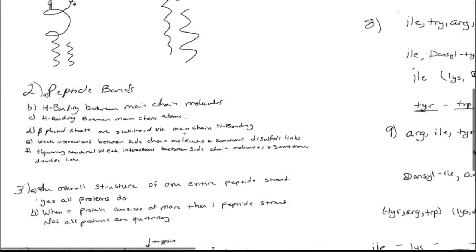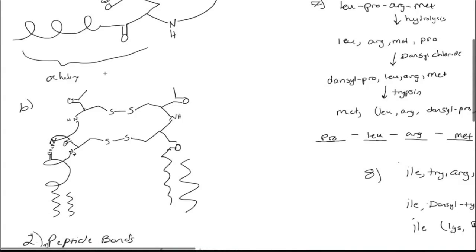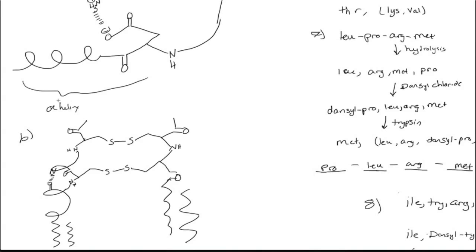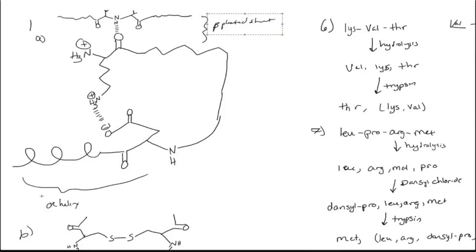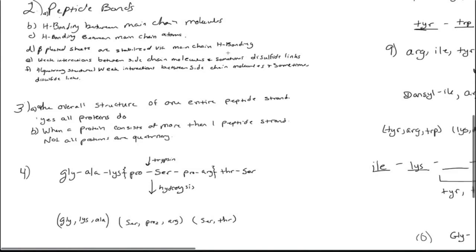Remember, I made the analogy last time with alpha helix and beta-pleated sheet. Why is an alpha helix called an alpha helix? It's just because alpha is the first letter of the Greek alphabet, and the alpha helix was the first type of secondary structure to be described. The beta-pleated sheet was called that because beta is the second letter of the Greek alphabet, and it was described second by chemists. So quaternary structure is just the fourth highest level of structure.